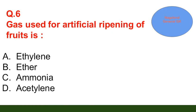Question number 6: The gas used for artificial ripening of fruits is — option A: ethanal; option B: ether; option C: ammonia; option D: aside. The correct answer is ethylene.